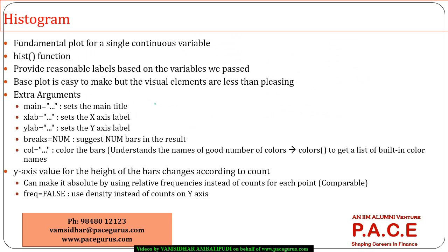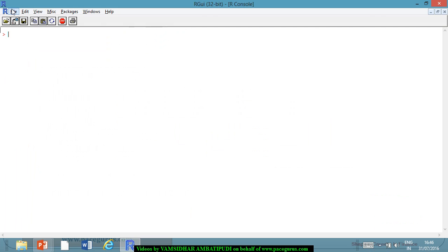With this, let's get started with the histogram — especially when you have a single continuous variable. Histogram is the default plot for one single variable. I can accomplish that using the function hist(). So let's do this from my data. We had the sales data — continuing with that sales data, let me load the data again.